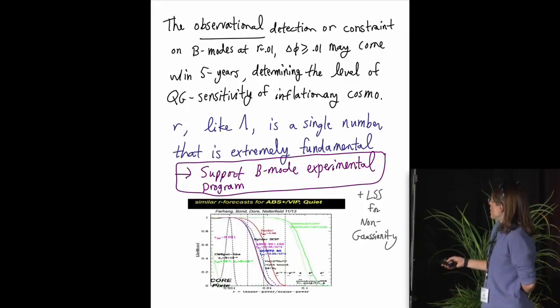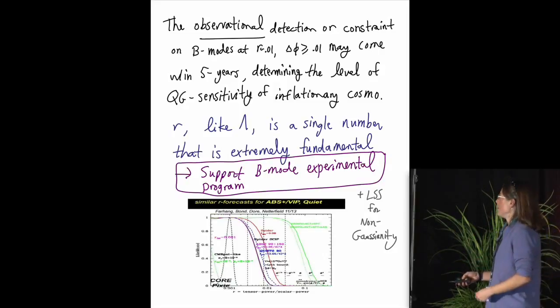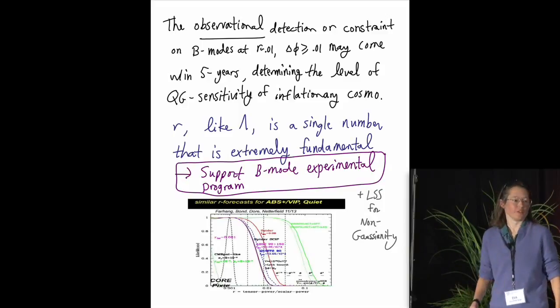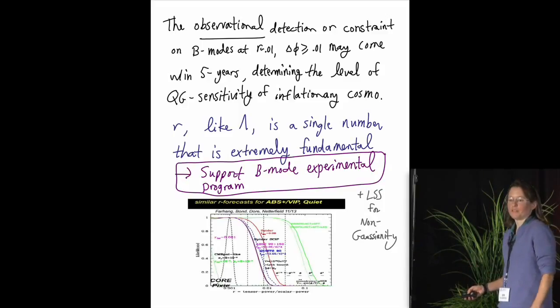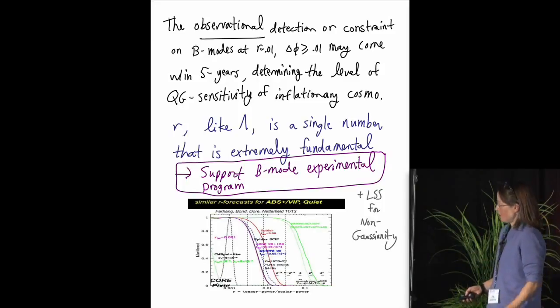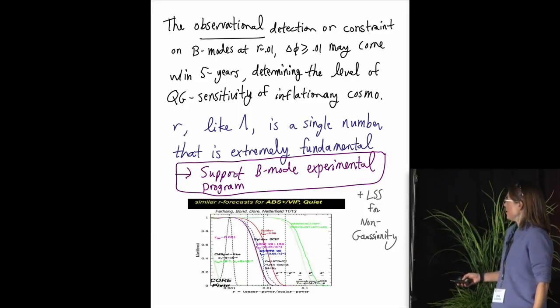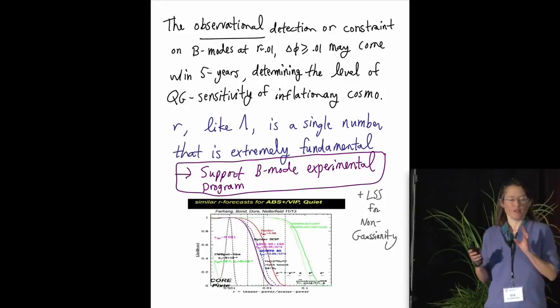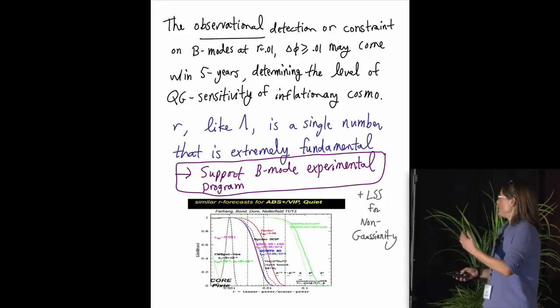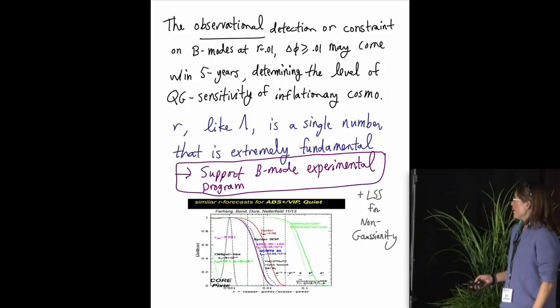So this is a big deal experimentally independently of any particular model. And I view it, this business of whether the tensor to scalar ratio r ends up at the value that corresponds to a super or subplanckian field range, as being, even though it's one number to look for, it's as interesting as any single number in physics, sort of like the cosmological constant discovery, though so far it's one number. It's just a huge breakthrough discovery. And because of that, even though this isn't a theoretical thing, I spend some effort and plan to continue to support the B mode experimental program. These are beautiful, relatively small scale and inexpensive, but extremely important experiments that deserve our support if we're interested in fundamental science.